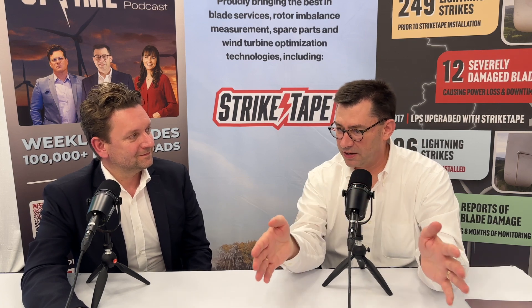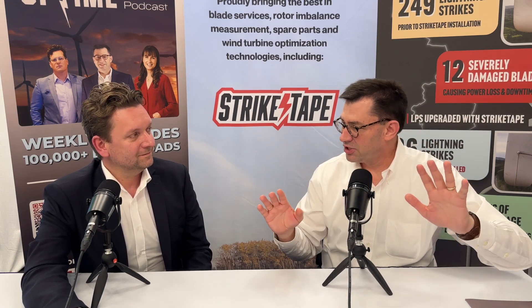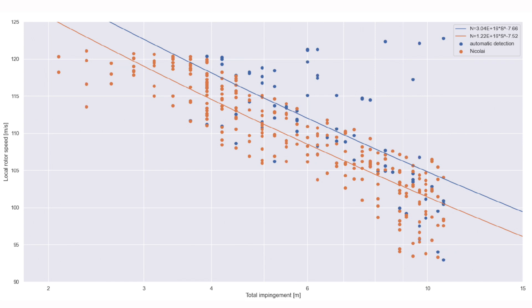I was just over in Denmark, went to DTU, saw the Leading Edge Erosion Conference — fascinated, great speakers, a lot of great data. One of the main discussion points was when you run a rain erosion test on a particular coating for a wind turbine, there's a lot of variability. The holy grail is to get what they call a VN curve for a coating — that's the velocity versus the number of impacts. You should be able to draw roughly a straight line.